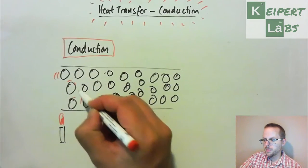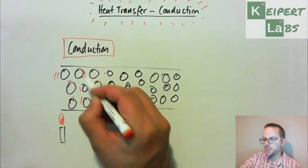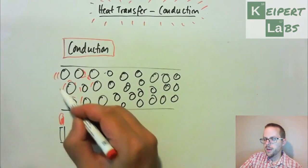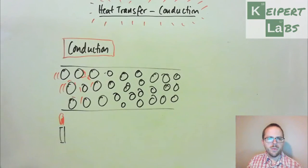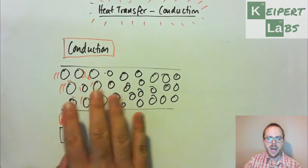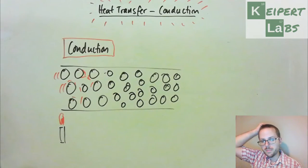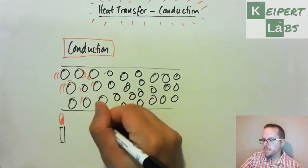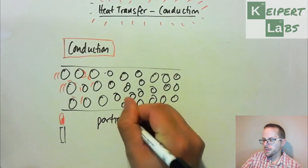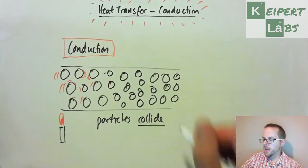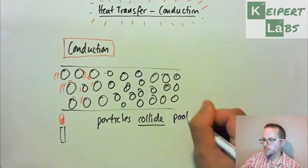What happens is that the particles at this end start to move around more. So, kind of representing with some of these red little motion lines. Okay, so they start to move around a lot more. Maybe they're vibrating more in their spot, maybe they're starting to move more and more from one place to another.